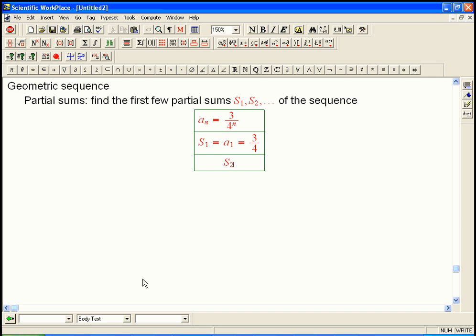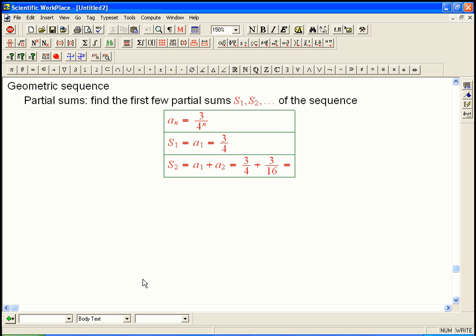All righty, so S sub 1 is just A sub 1, and that's 3 fourths. S sub 2 is A sub 1 plus A sub 2. That's 3 fourths plus 3 sixteenths. If we simplify that, that's 12 plus 3. That's 15 sixteenths.